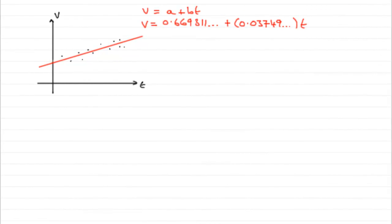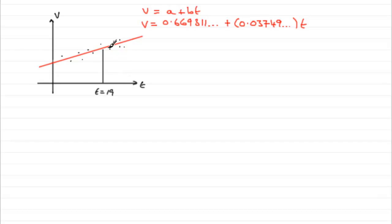This last part then is very straightforward. We've just got to find out the noise level, the value of v when t is 19. So if we had our model here, it's a question of just looking at when t is 19, substituting it into our equation, our regression model, and it should work out this value of v.